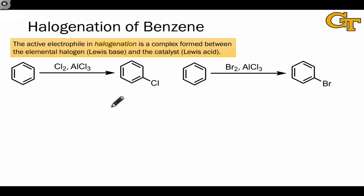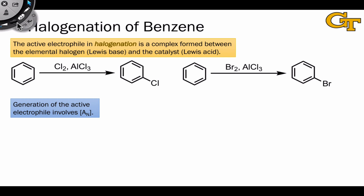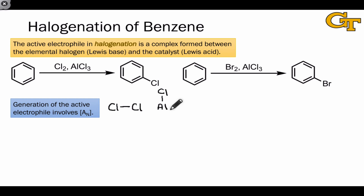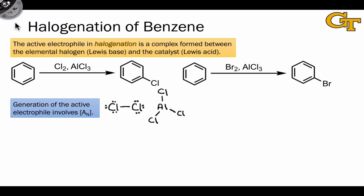Here are two examples of halogenation of benzene using Cl2 and Br2, together with the Lewis acidic promoter AlCl3. How exactly is the active electrophile generated? It actually involves a simple Lewis acid-base complexation between the halogen and AlCl3. Working with the chlorination example involving Cl2: we've outlined why AlCl3 is a good Lewis acid, but it's perhaps less intuitive why Cl2 is a good Lewis base. The chlorine atoms have lone pairs, and these lone pairs are capable of being donated to a Lewis acidic center.